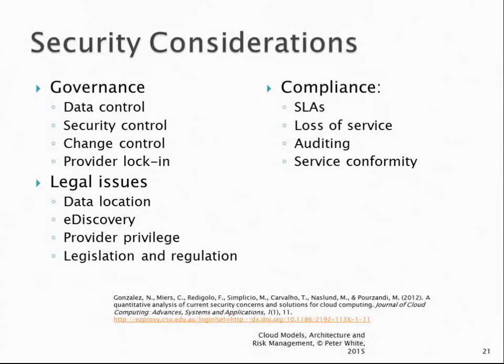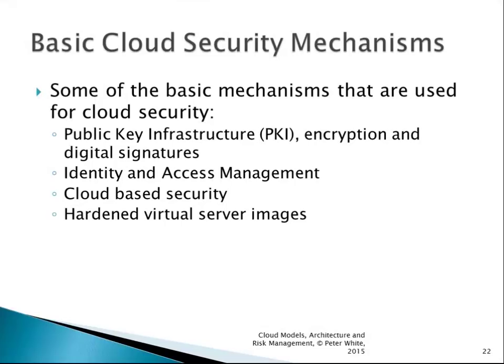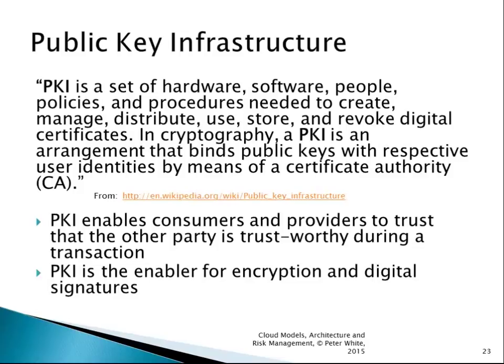Now we look at some of the basic cloud security mechanisms: PKI (public key infrastructure), which covers encryption, decryption, and digital signatures; identity and access management — identification, authentication, and authorization of users; cloud-based security groups; and hardened virtual server images. PKI is a set of hardware, software, people, policies, and procedures needed to manage, distribute, use, store, and revoke digital certificates. It is an arrangement that binds public keys with respective user identities by means of a certificate authority. You might go to a trusted CA like VeriSign to buy a certificate, where they go through a procedure identifying you and writing that into the certificate.